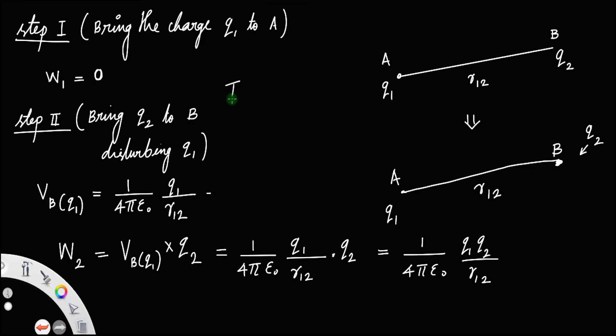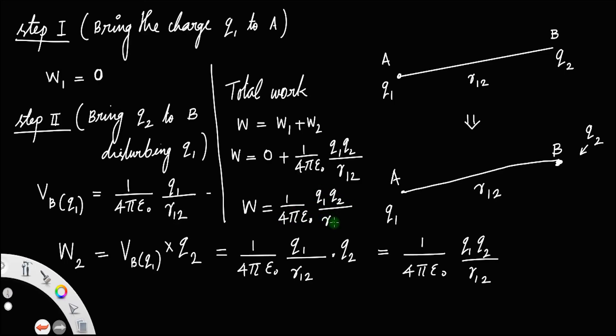So, the total work W will be W1 plus W2. That is work done in these two processes. That is W is equal to, we have W1 equal to 0 plus W2 equal to 1 by 4 pi epsilon 0 q1 q2 divided by r12. So, the total work is equal to 1 by 4 pi epsilon 0 q1 q2 divided by r12.